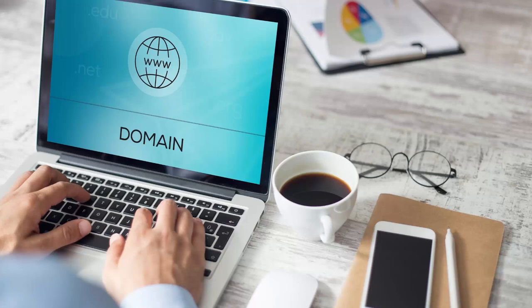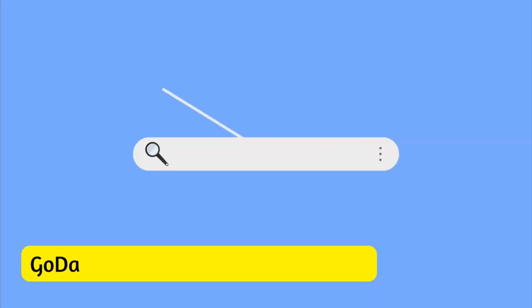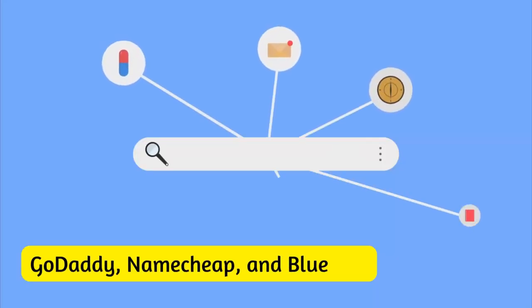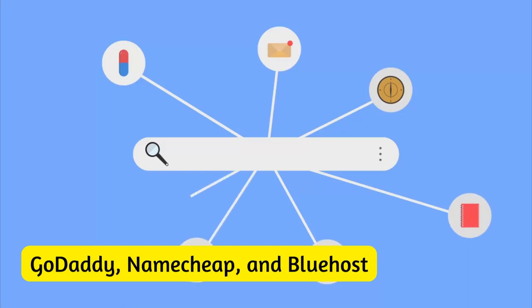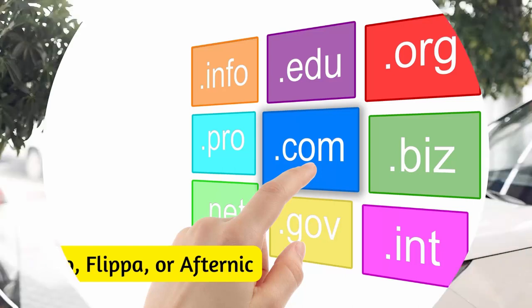Number five: buy and resell domain names. This involves purchasing domain names that are currently available with the aim of reselling them at a higher price to interested buyers. Many websites allow you to search for and purchase domain names — popular registrars include GoDaddy, Namecheap, and Bluehost. Once purchased, you can list them for sale on marketplaces such as Sedo, Flippa, or Afternic, or reach out to potential buyers directly.